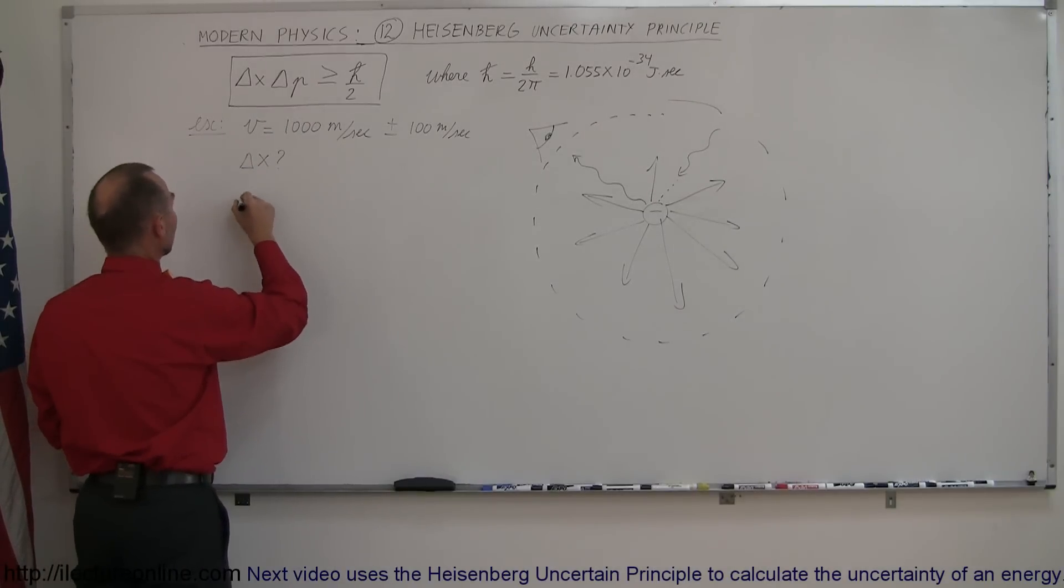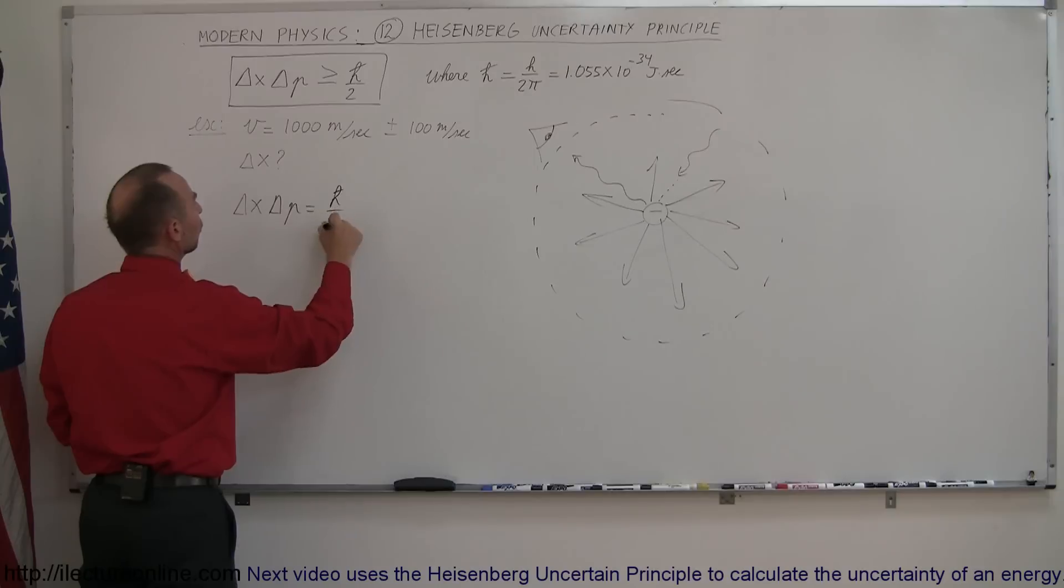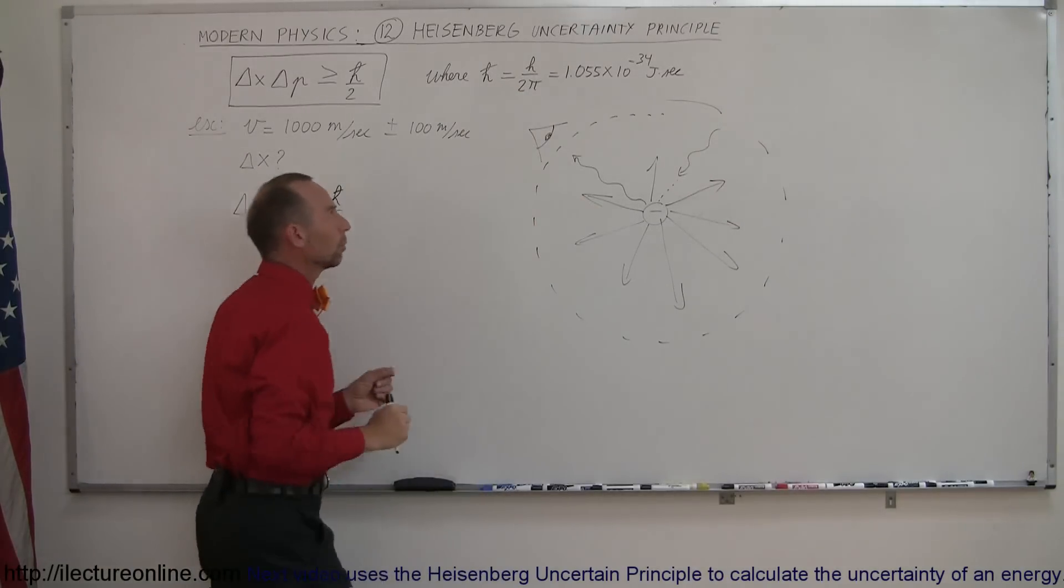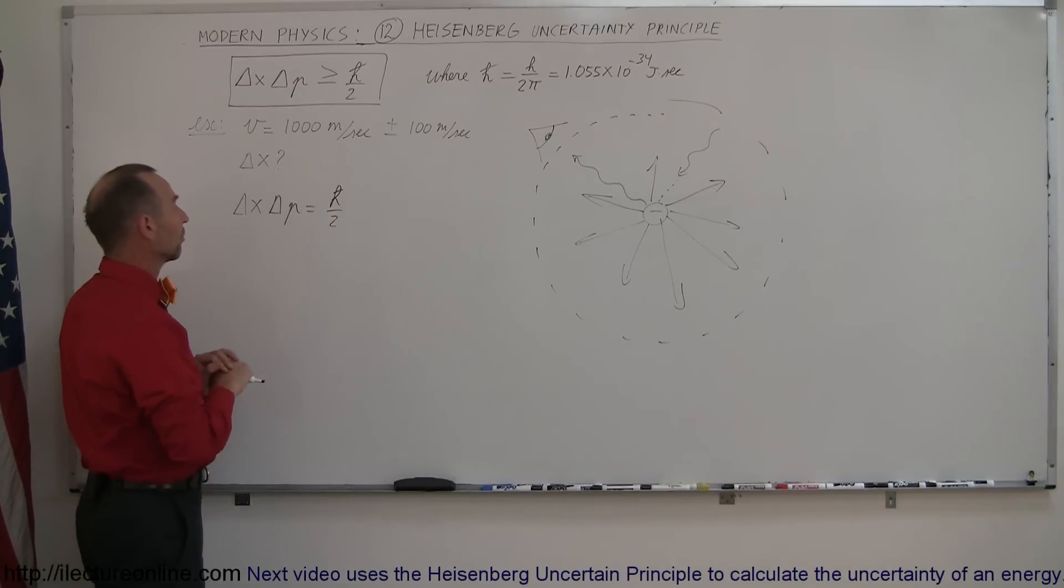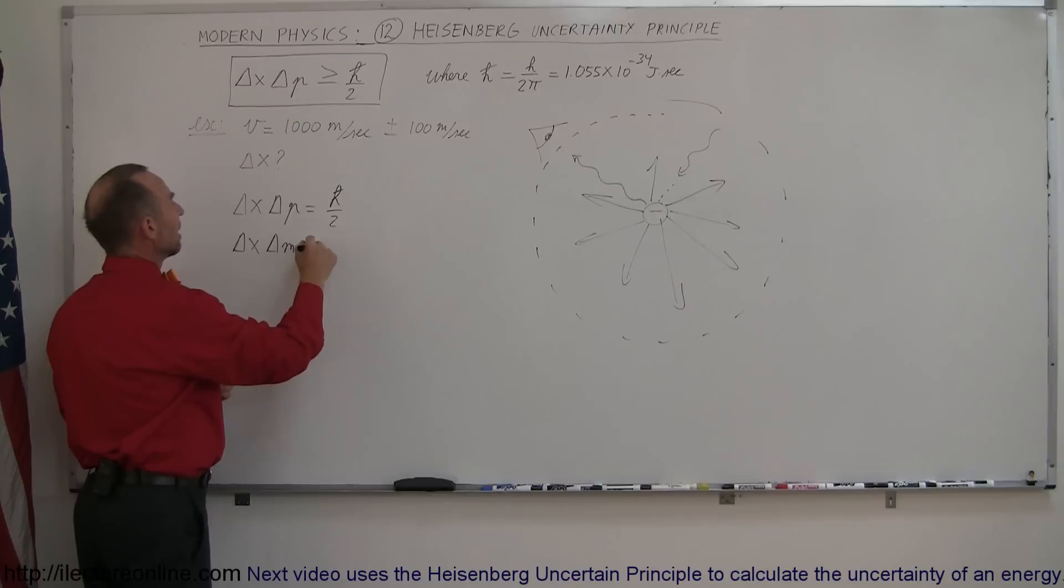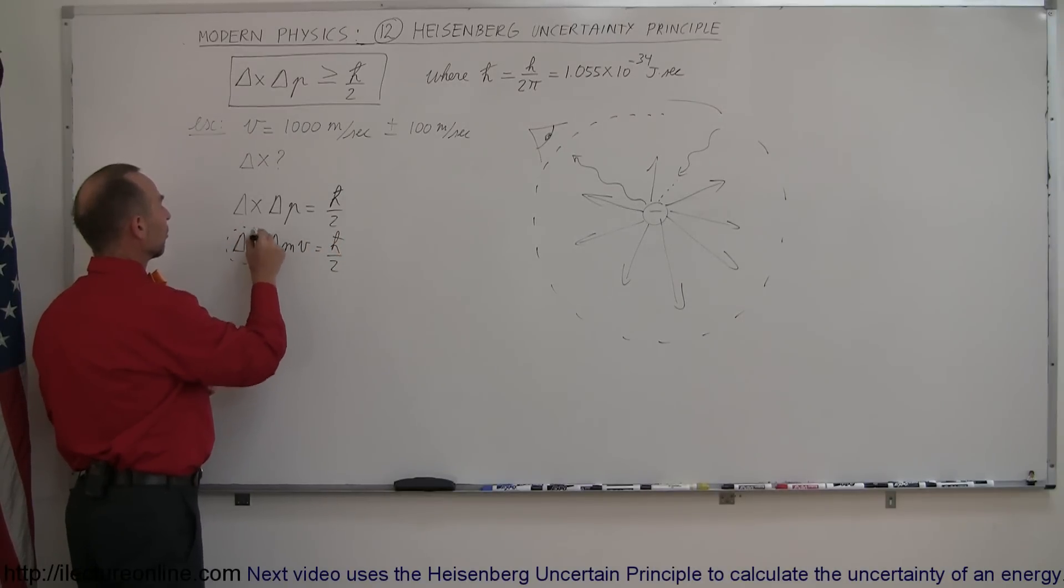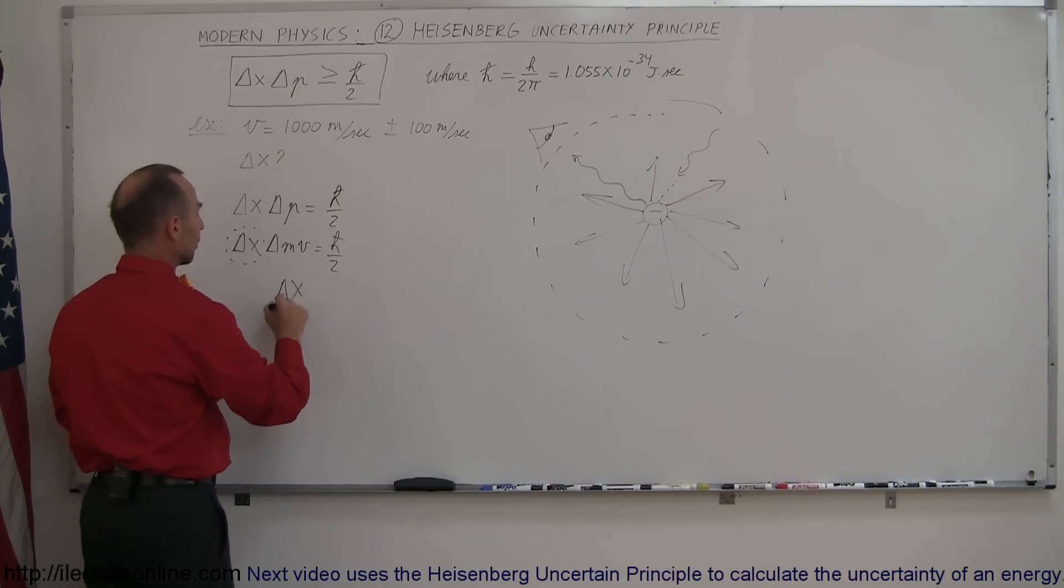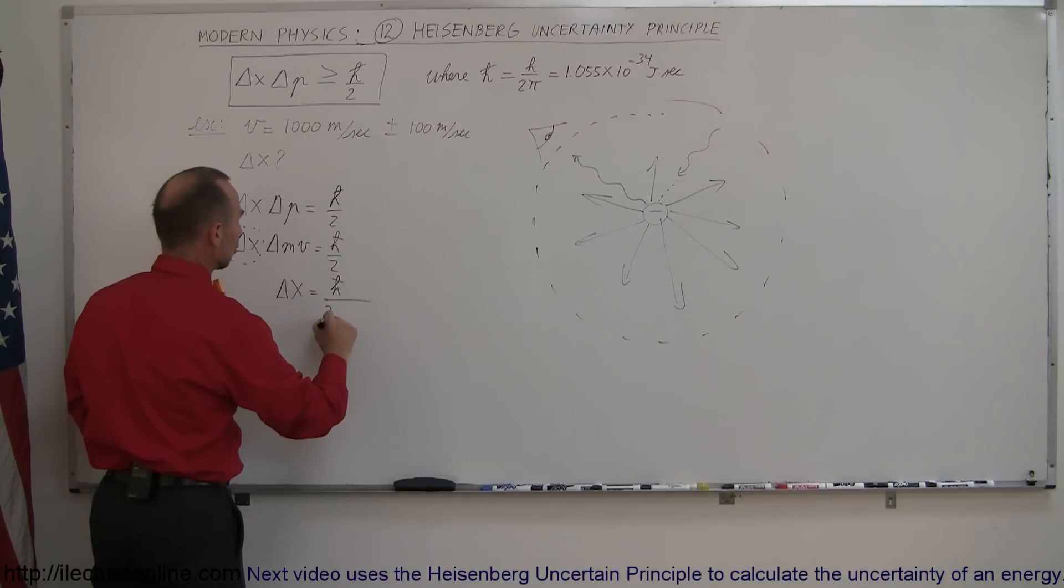So let's use our equation, delta x times delta p is equal to h-bar over 2. And for our identification, h-bar is h over 2 pi, which can be written like that, 1.05 times 10 to minus 34 joules times seconds. So we know that momentum is m times v, so we can say that delta x times delta mv is equal to h-bar over 2. Since we're looking for the uncertainty in position, we can take this and move to the bottom here, and that means we can say delta x, the uncertainty in the position, is equal to h-bar divided by 2 times delta mv.